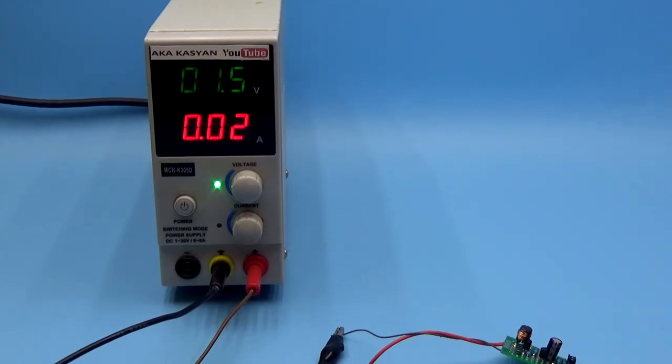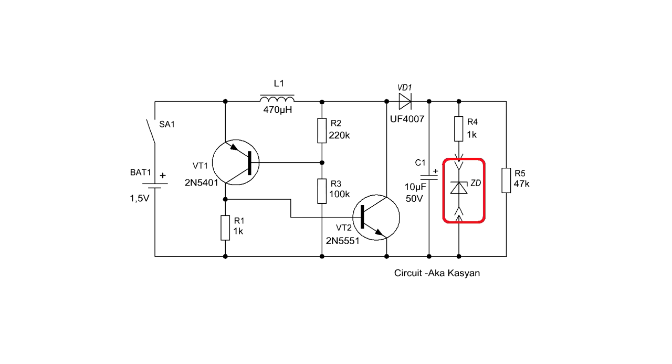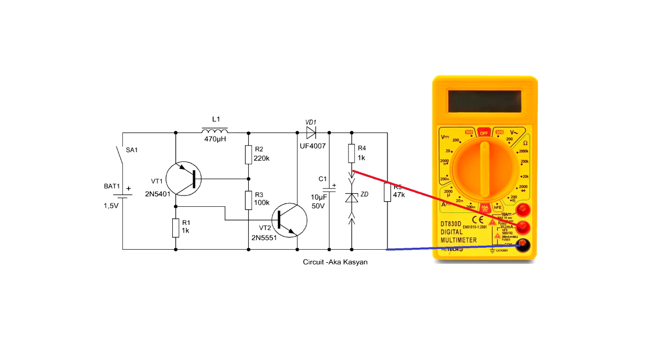The current consumption of the circuit is meager, about 10-20 mA. The tested zinnier diode is connected to the output of the converter through the current limiting resistor. Multimeter probes are connected in parallel to zinnier diode. It simply measures the voltage on diode.